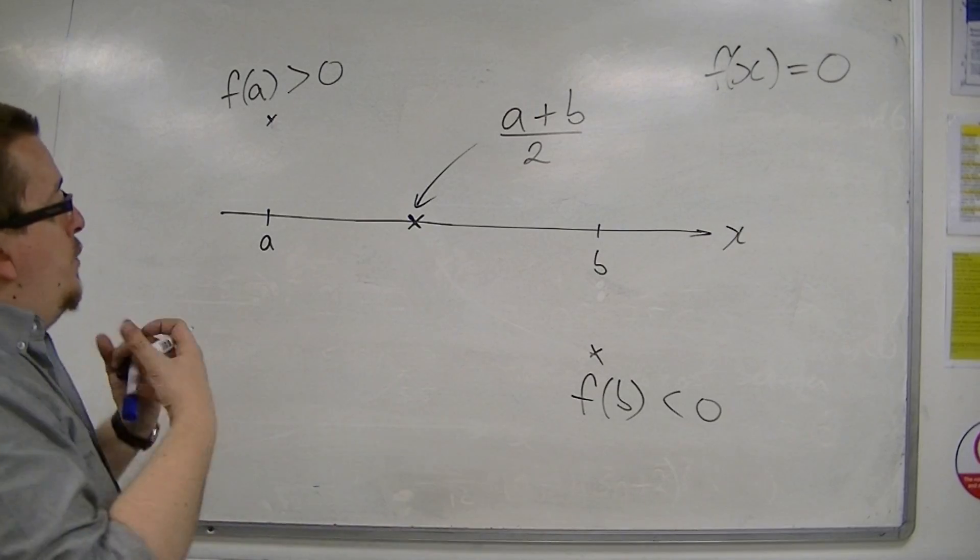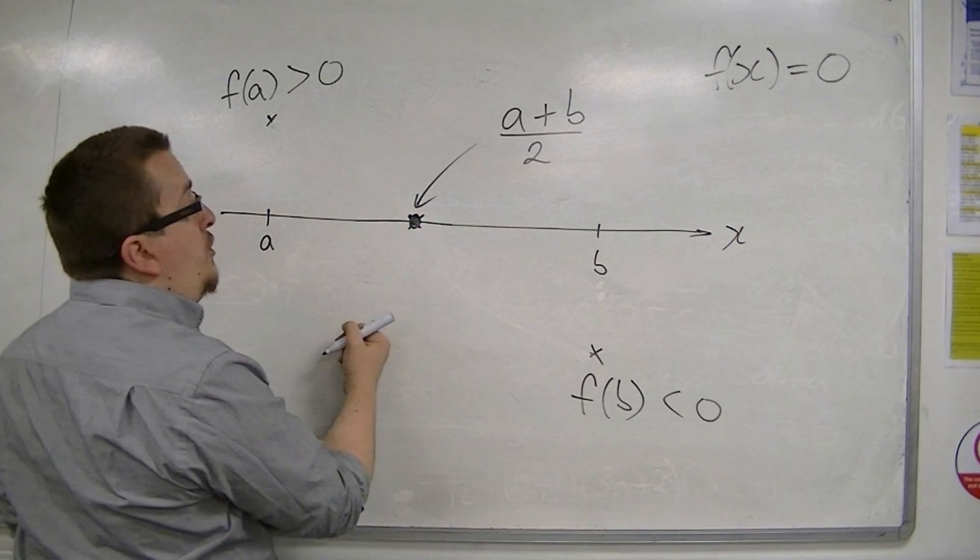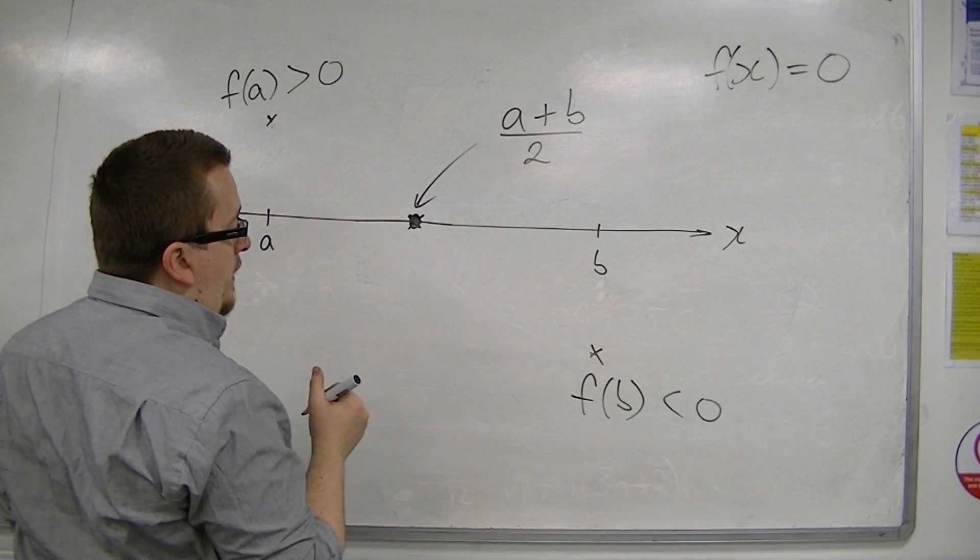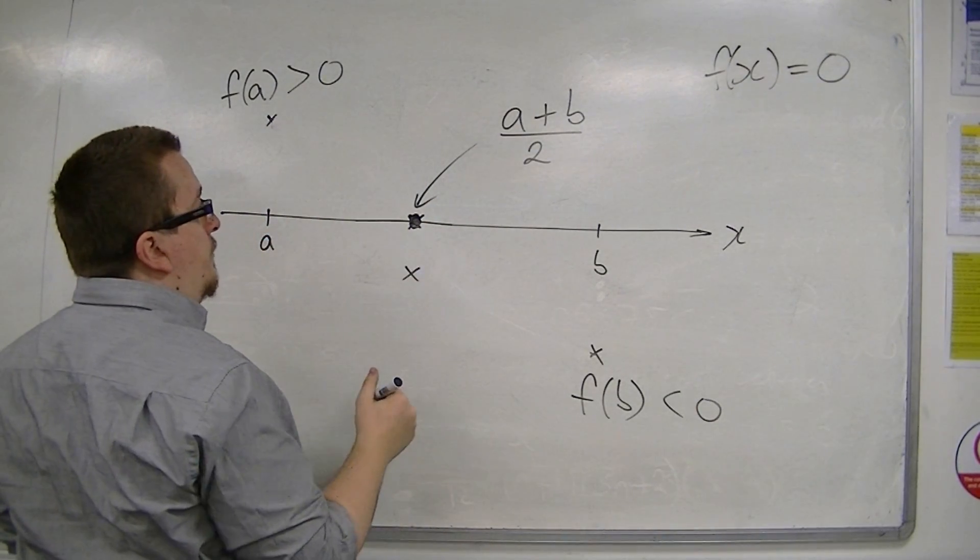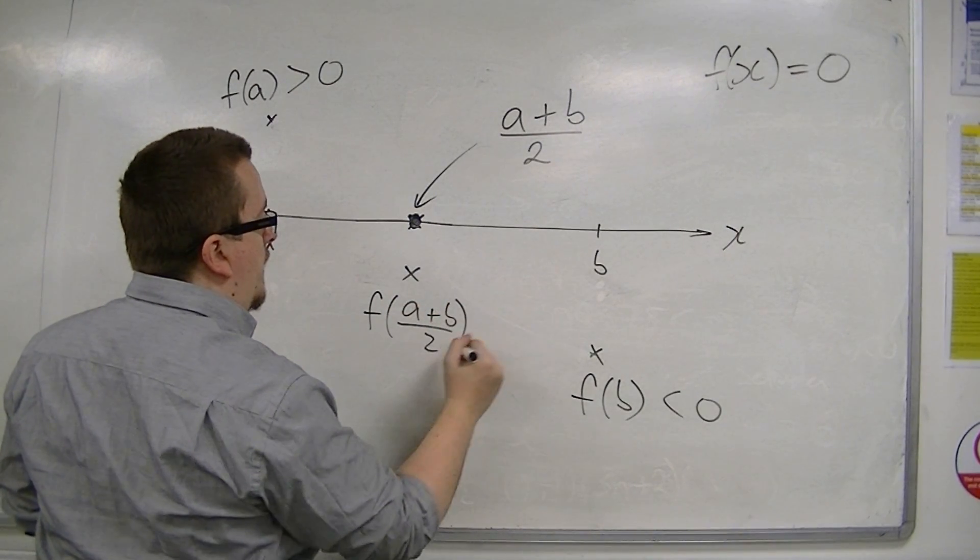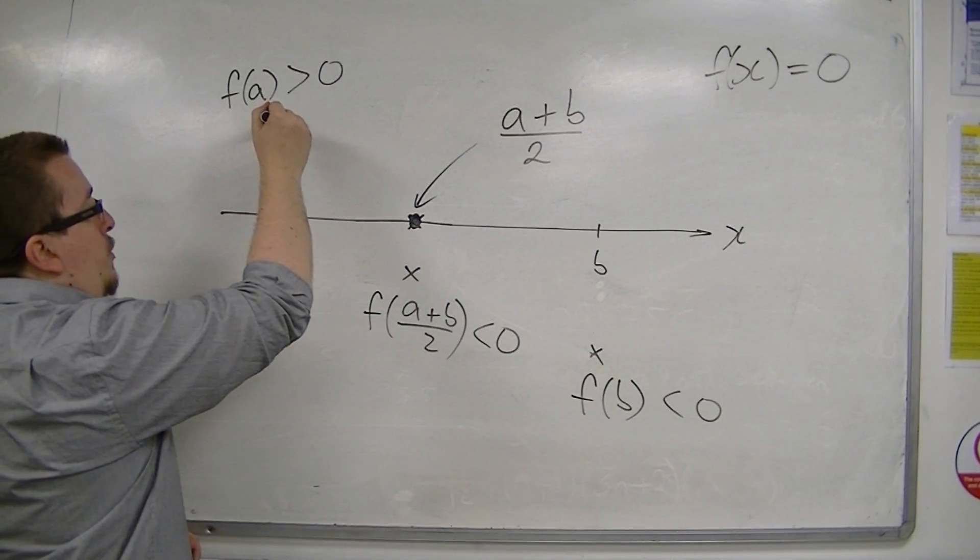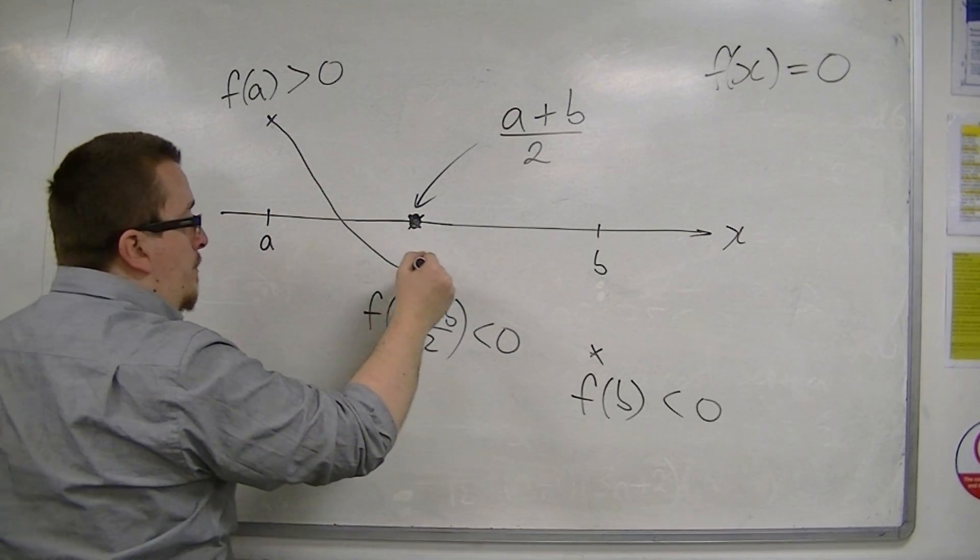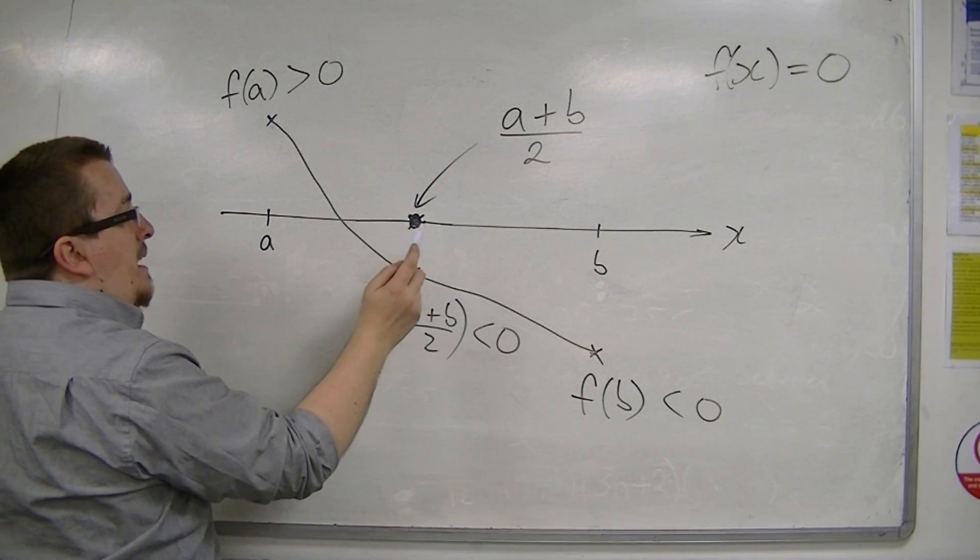Now, the reason why I would look at the midpoint is that if, when I substitute the midpoint into f of x, and I found that I got this point, for example, so this is f of a plus b over 2, and I find that to be negative, that would mean that the solution must now be between a and that midpoint.